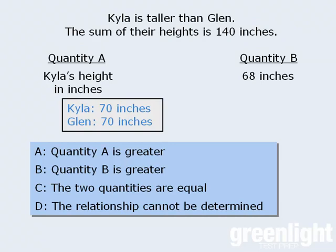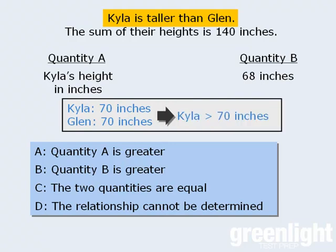In this scenario, Kyla and Glenn would be the same height. However, since we're told that Kyla is taller than Glenn, it must be the case that Kyla is taller than 70 inches.